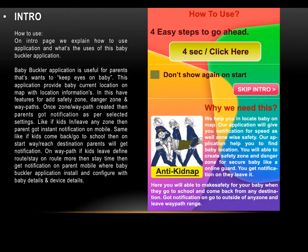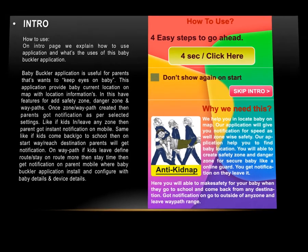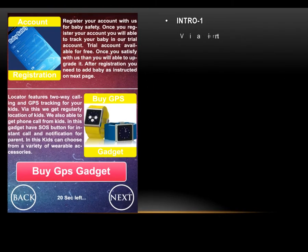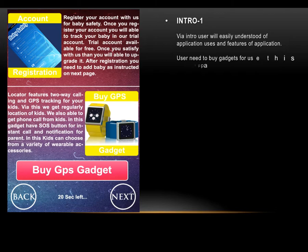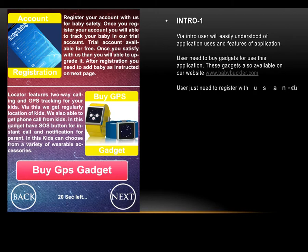Baby Buckler is installed and configured with baby details and device details. By the end, users will easily understand the application's features. Users need to buy gadgets to use this application. These gadgets are also available on our website at www.babybuckler.com. Users just need to register with us and use the gadget to add a new baby account.